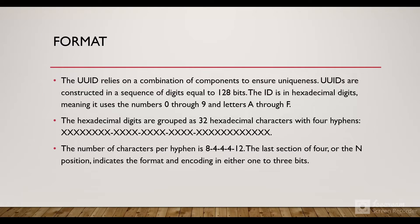Now let's see the format of UUID. The UUID relies on a combination of components to ensure uniqueness. UUIDs are constructed in a sequence of digits equal to 128 bits. The ID is in hexadecimal digits, meaning it uses the numbers 0 through 9 and letters A through F. The hexadecimal digits are grouped as 32 hexadecimal characters with four hyphens. The number of characters per group is 8, 4, 4, 4, and 12.